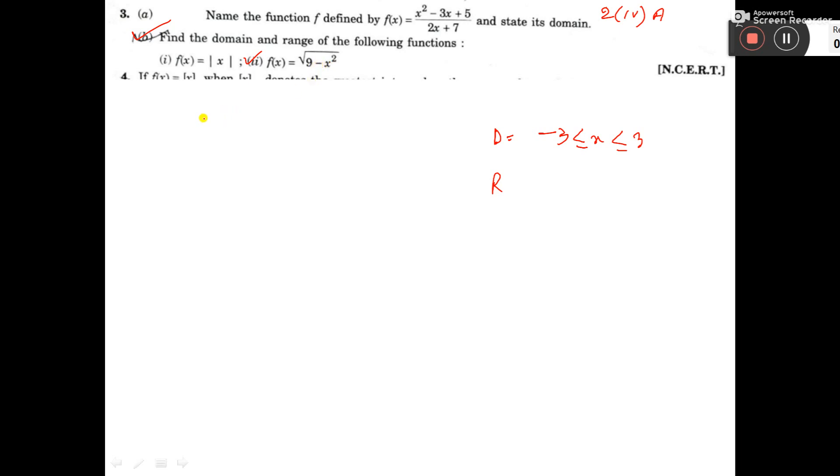That is why I am writing 9 minus x square should be greater than 0 or greater than equal to 0. Because if it is 0, then also it will be valid. So we can write (3 minus x) into (3 plus x) greater than equal to 0.